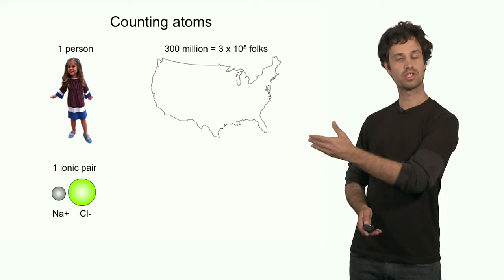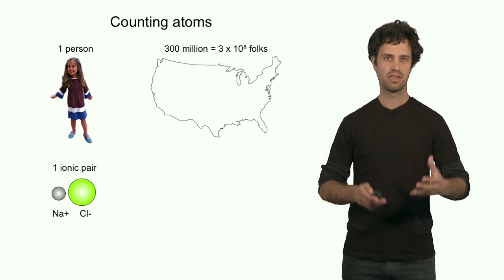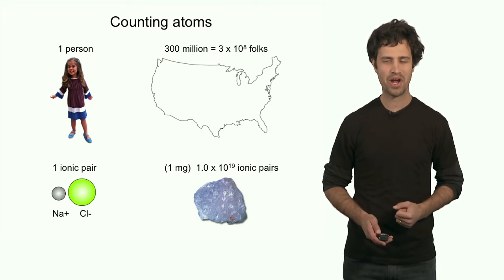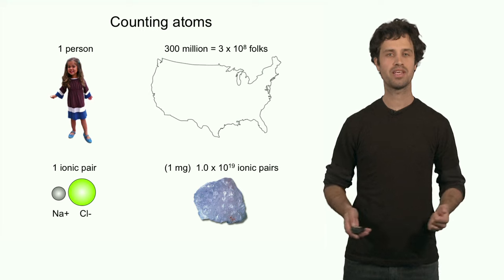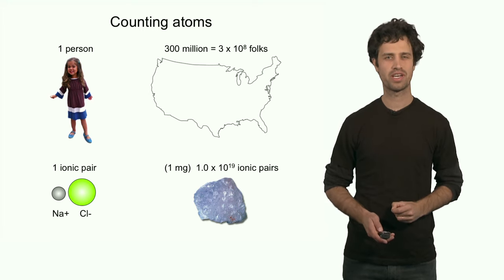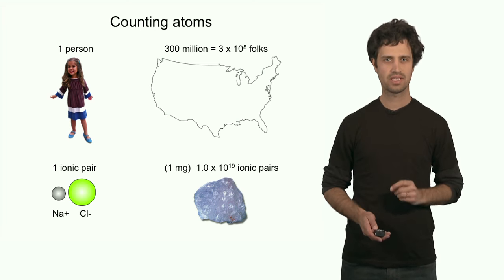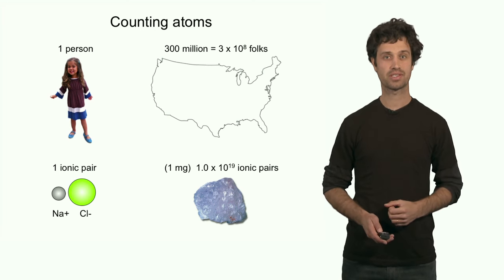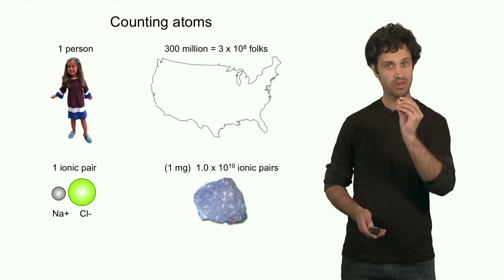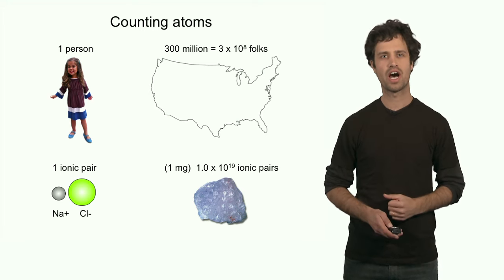For instance, let's look at this ionic pair — it is sodium chloride. A grain of salt is not composed of just one ionic pair. In fact, it contains many, many, many. One milligram, a tiny little snippet of a grain of salt, contains about 1 times 10 to the 19 ionic pairs. This is a very large number, and mind you, this is only a very small grain of salt. So the numbers are mind-bogglingly high.